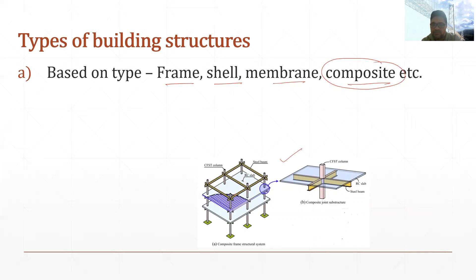In this building we can see the structure — these are the vertical members, these are the horizontal members, and on the horizontal members some plates are resting. When we construct vertical members, horizontal members, and plates of different materials, we call it composite construction. For example, in the second figure the vertical and horizontal members are constructed in steel sections while the plate — which we call the slab — is constructed using concrete. So two different materials are used.